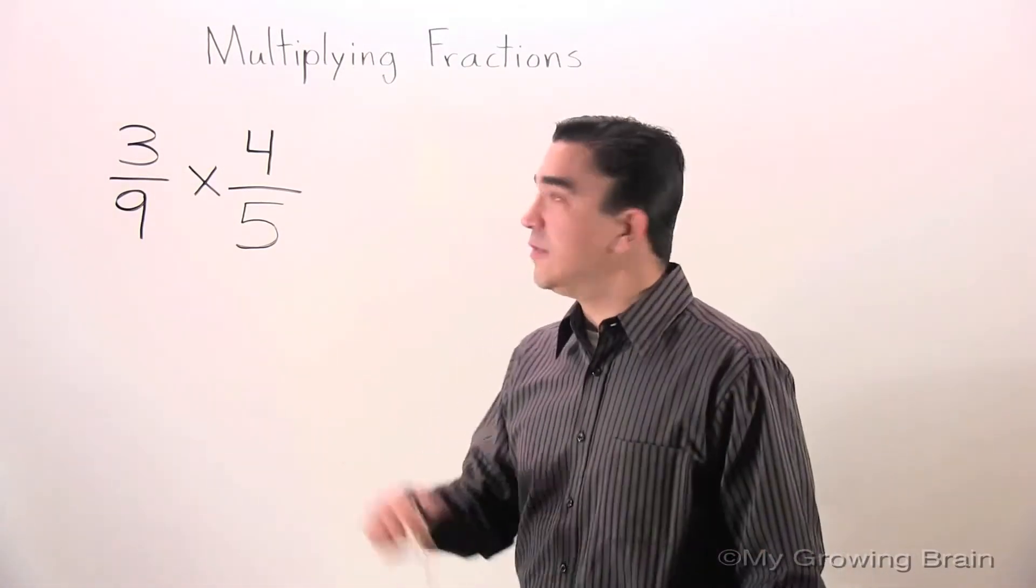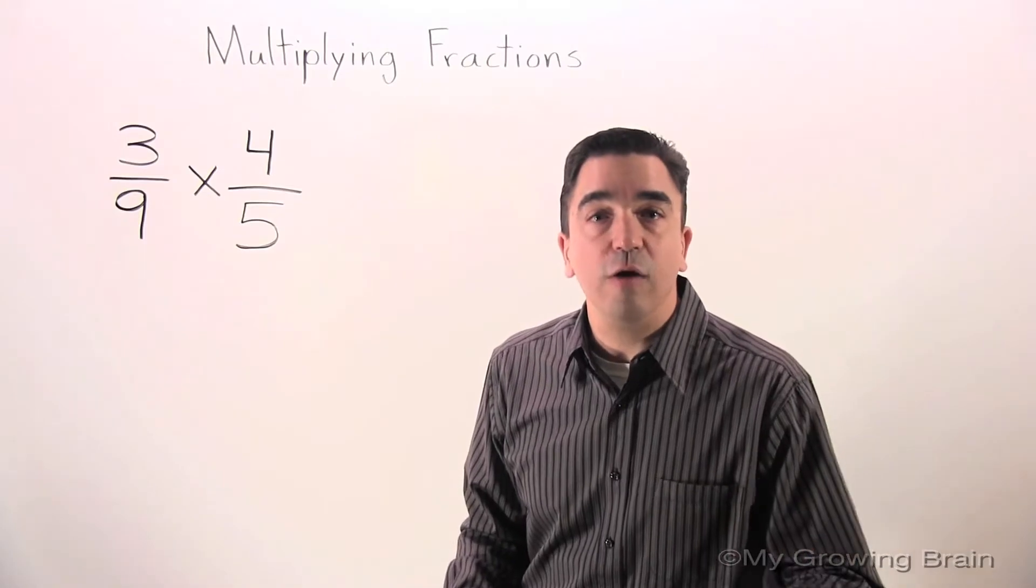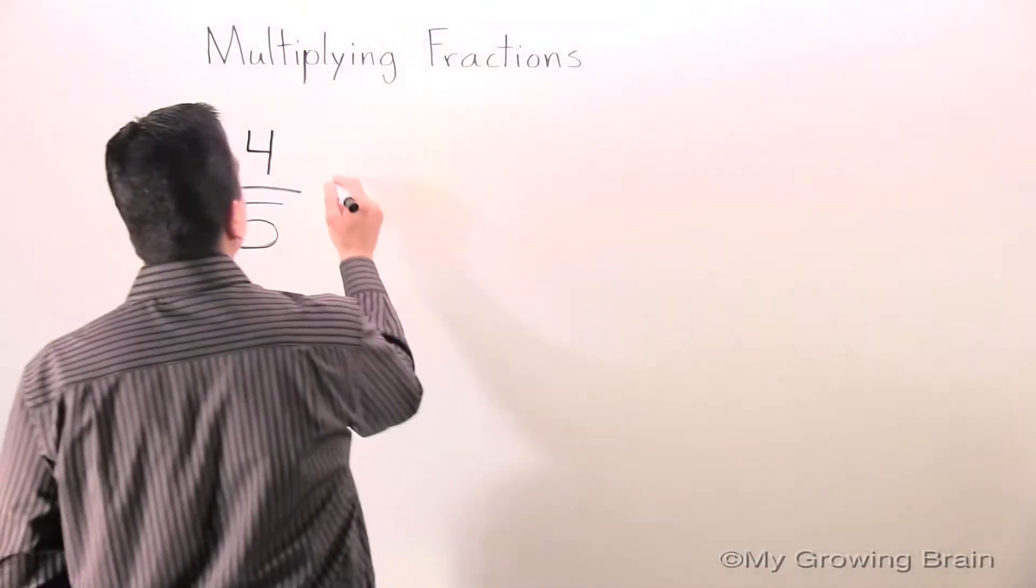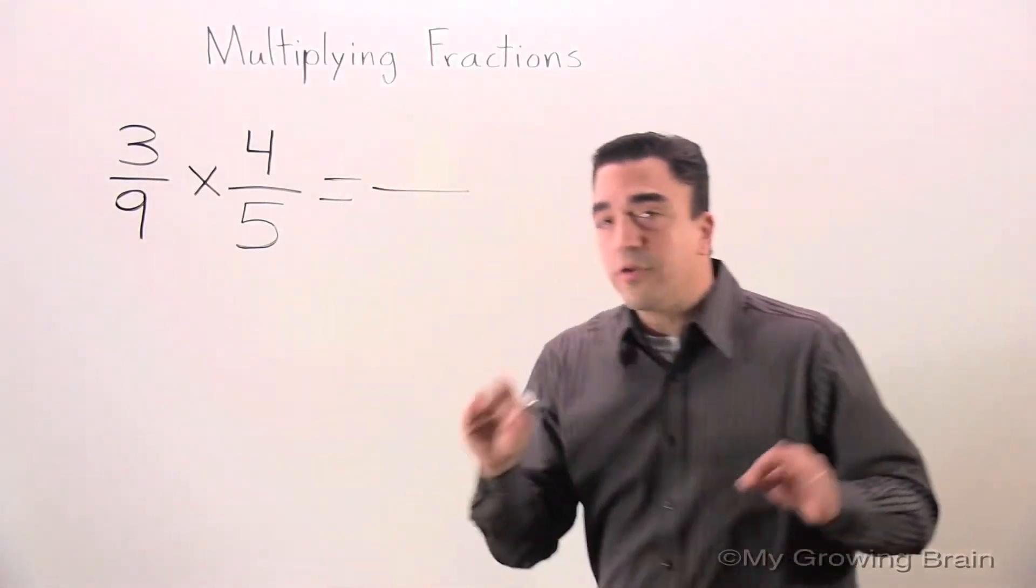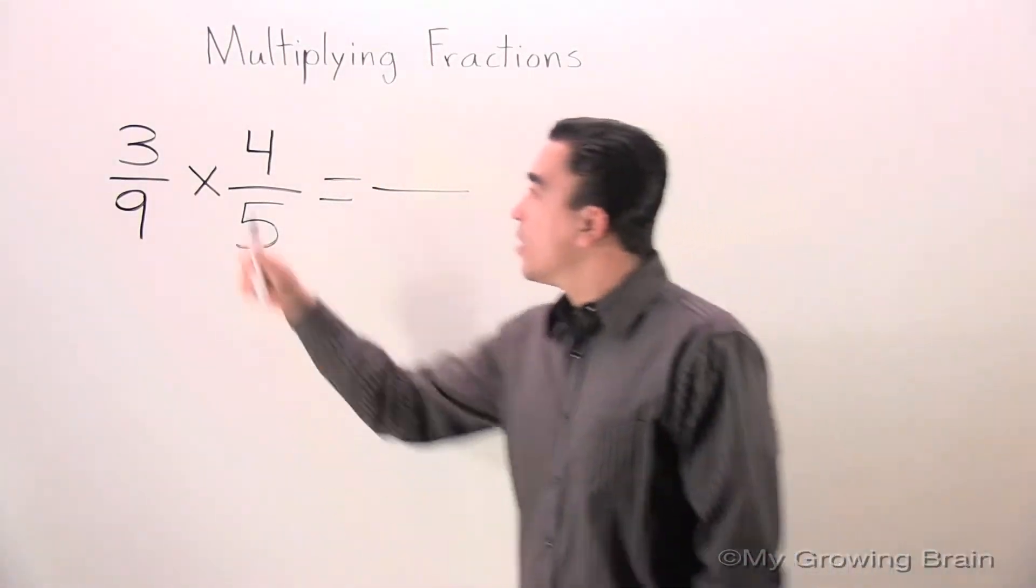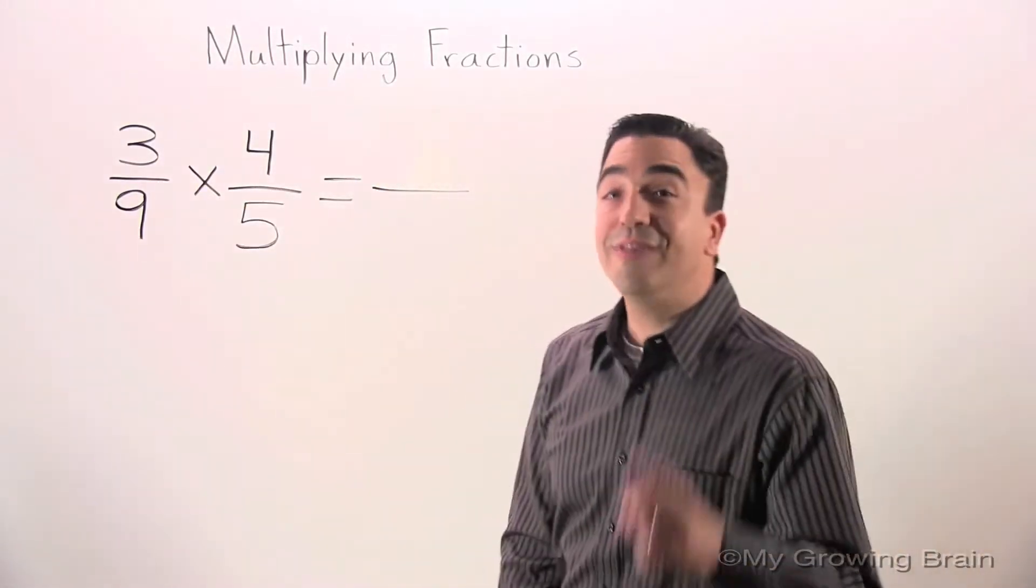So, you know what? Let's just go on and multiply our fractions. We're going to start with the numerators. 3 times 4 is equal to 12.